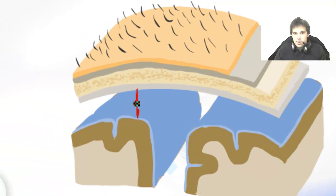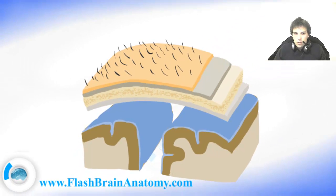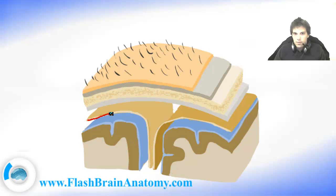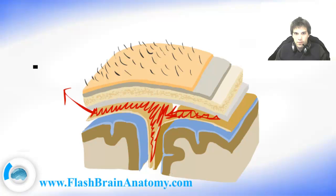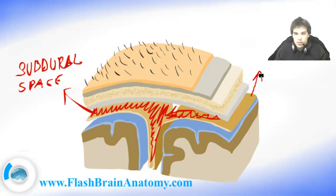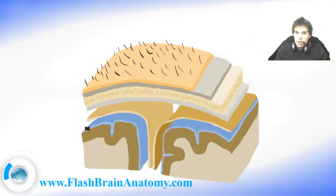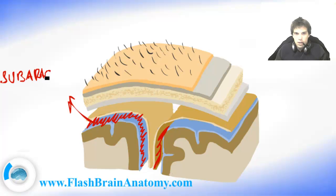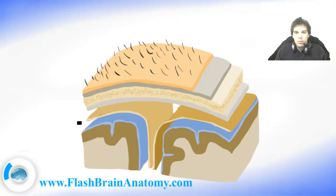We obviously have some space here, and we're going to draw the rest of the membranes. Between the dura mater and pia mater there is one membrane called the arachnoid mater. The arachnoid mater does not follow the curvature of the brain. The space between dura mater and arachnoid mater is called the subdural space. The space between pia mater and arachnoid mater is called the subarachnoid space. One more thing is that the arachnoid mater does not follow the curvature of the brain as the pia mater does.